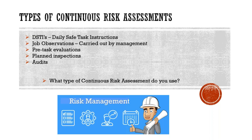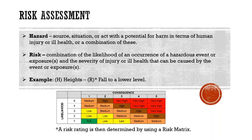Daily safe task instructions, job observations, pre-task evaluations, planned inspections, and even audits are just some types of continuous risk management. We'd like to ask: what are you using? Are you using one, more, or all of them to ensure you remain safe on site? Risk assessment is one of the most vital parts of our management system.